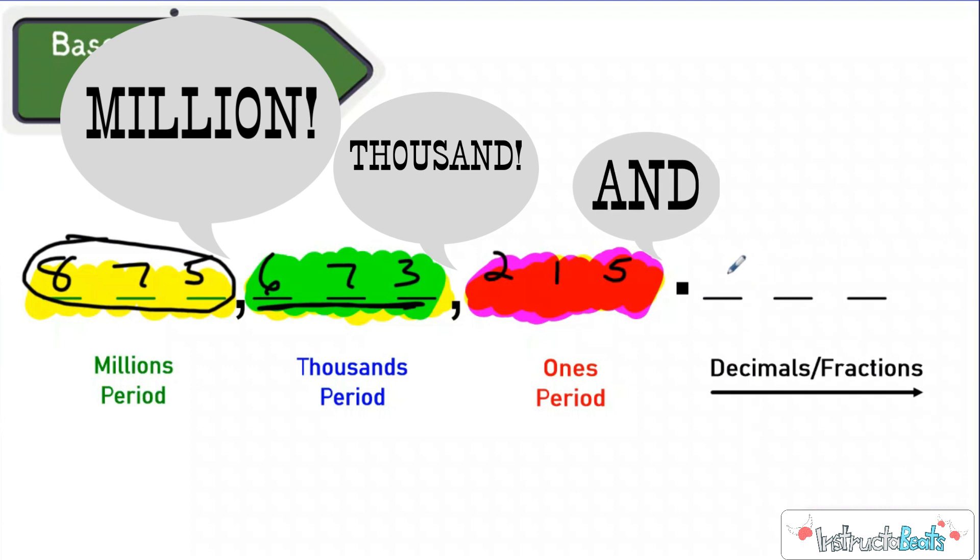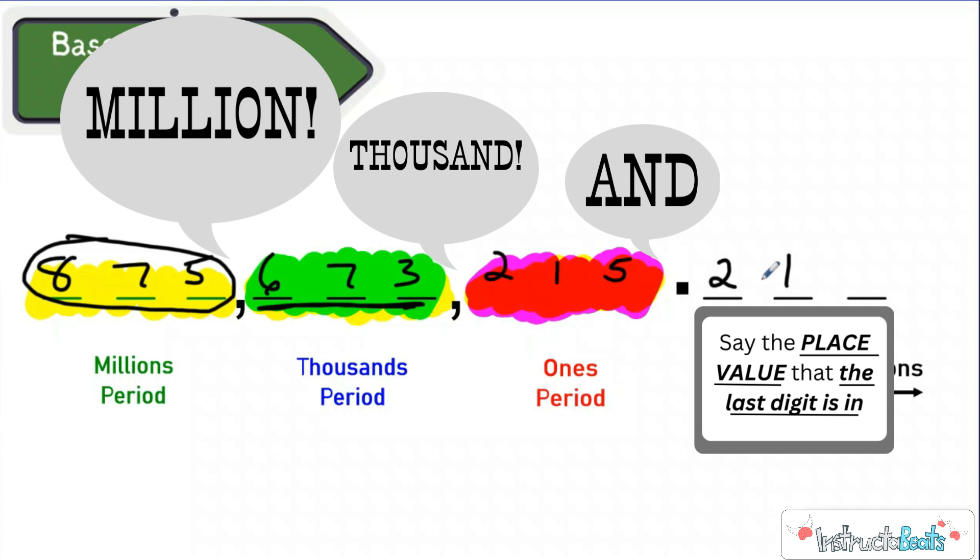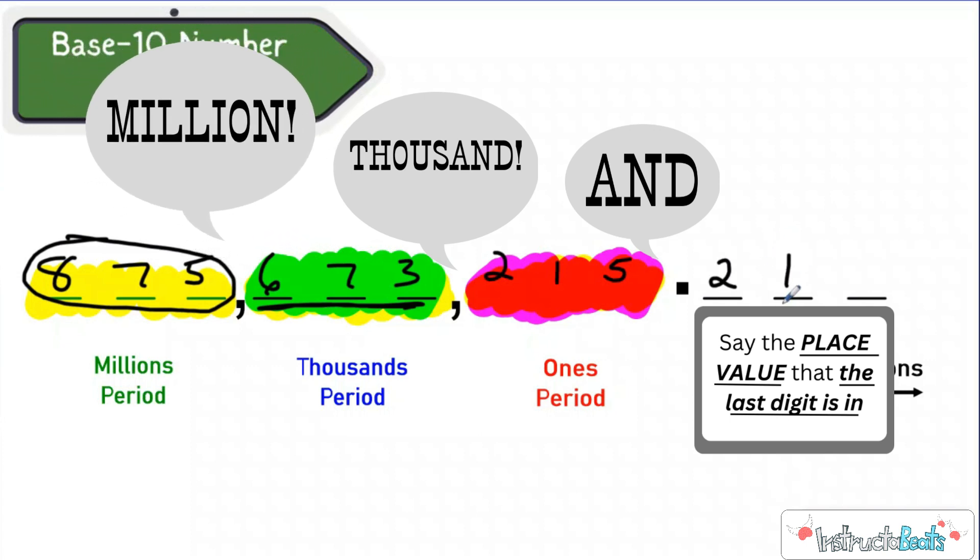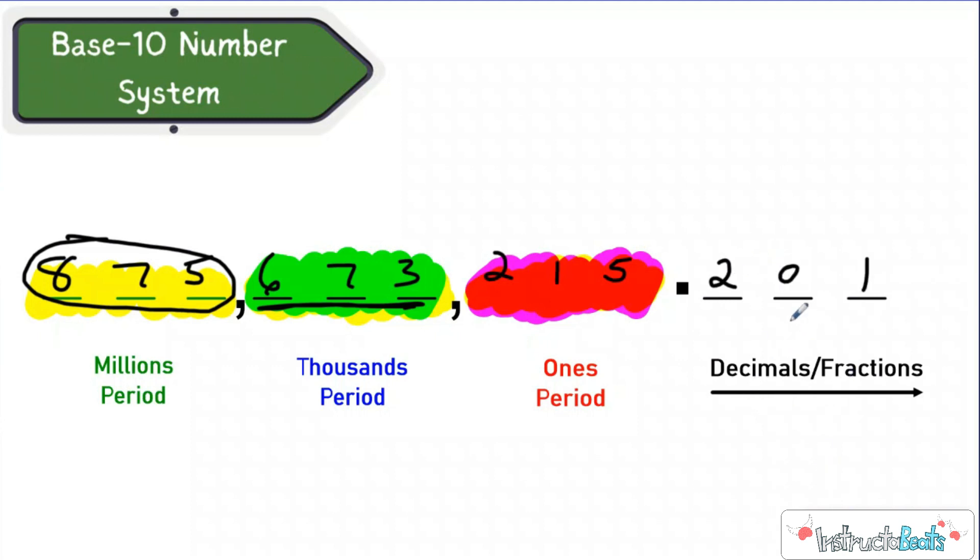Now if we add a decimal to it, decimals have a little bit different rule. You always say the place value that your last digit is in. So let's say this one, let's just chunk it. So 875 million, 673 thousand, 215, and 21. We're just saying the number, 21 hundredths because the last digit is in the hundredths place. If we move the last digit to the thousandths place, then we'd say 875 million, 673 thousand, 215, and then just say this number right here, 201. That's how you would say it. So 201 thousandths. So just chunk these big numbers, say the name of the period when you get to the comma, and then say the word and when you get to the decimal, and then you always say the place value that the last digit is in for anything after the decimal. Pretty simple.